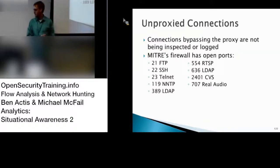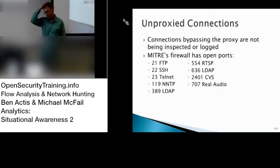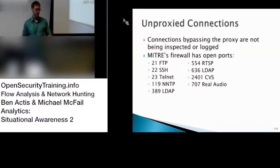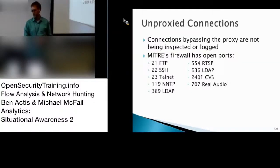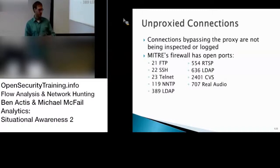Something else you can look for is non-proxy connections. In most places you're going to have proxies, particularly for web. Your web proxies are going to be logged, you'll be able to see connection information, and hopefully you're pulling it back, analyzing it, and combining it with your standard NetFlow. But there are going to be connections that aren't through proxies — unless you're looking for those in other ways, you're not going to aggregate them. MITRE's firewall reports include things like SSH and FTP. Those are worth knowing about — it's worth knowing when somebody's connecting out, and looking for large flows out as a simple signal for exfiltration.